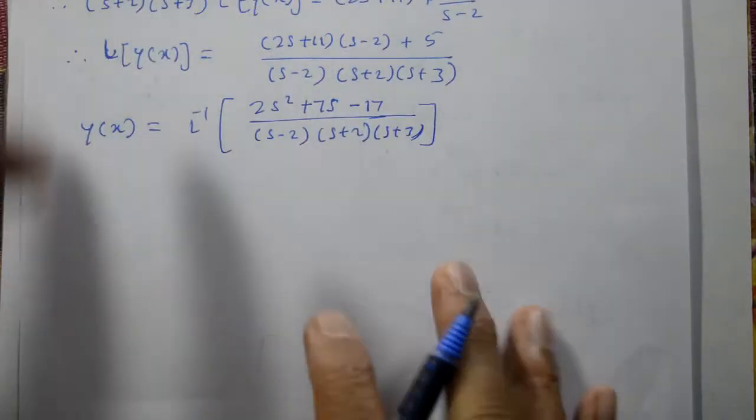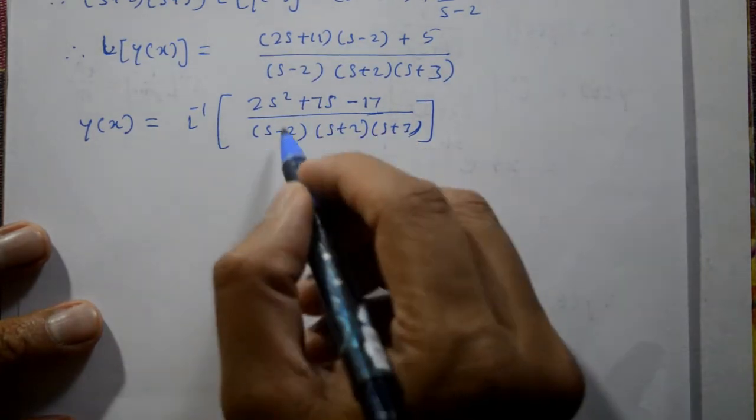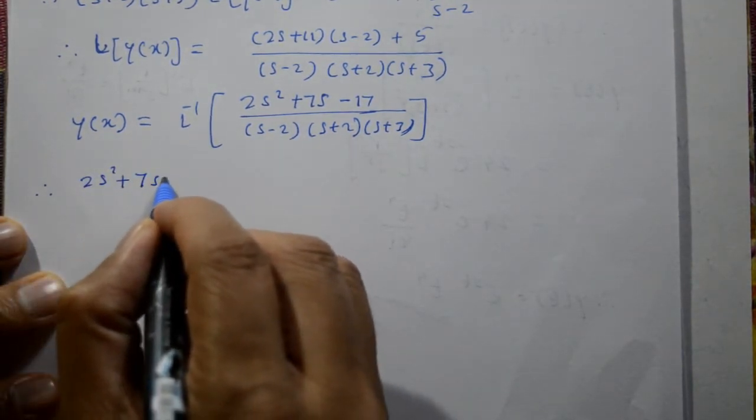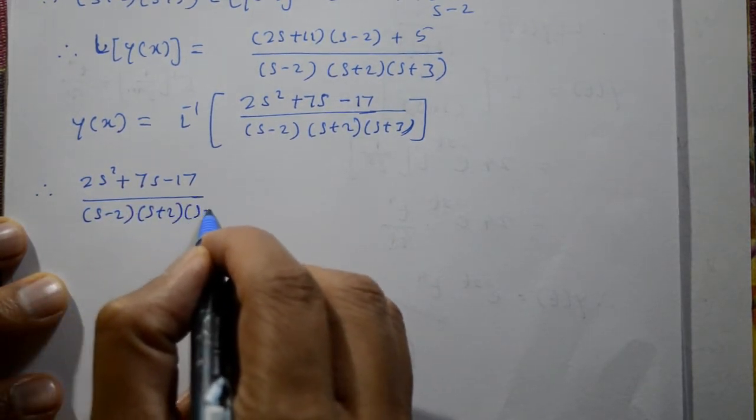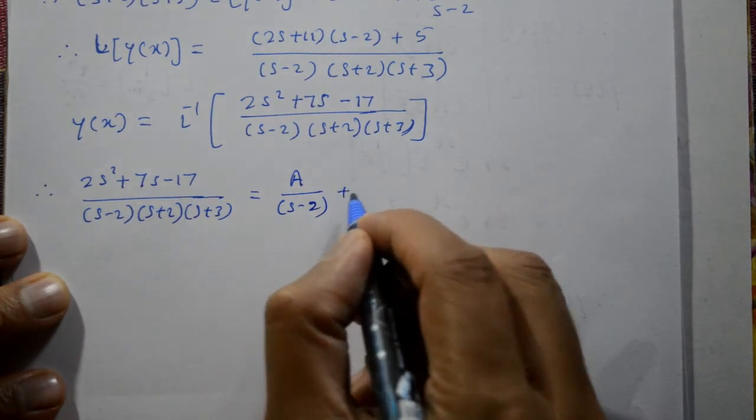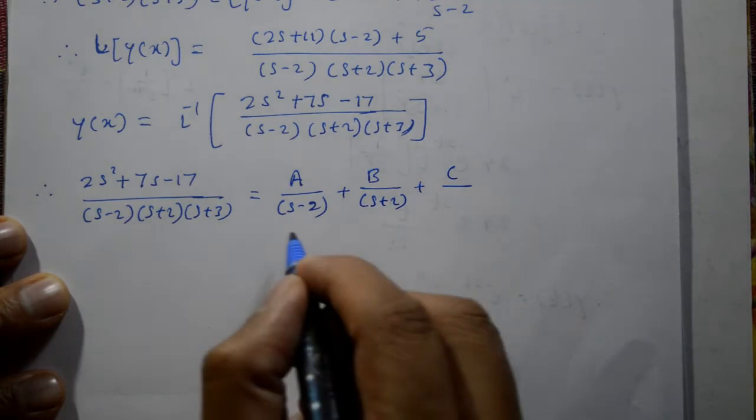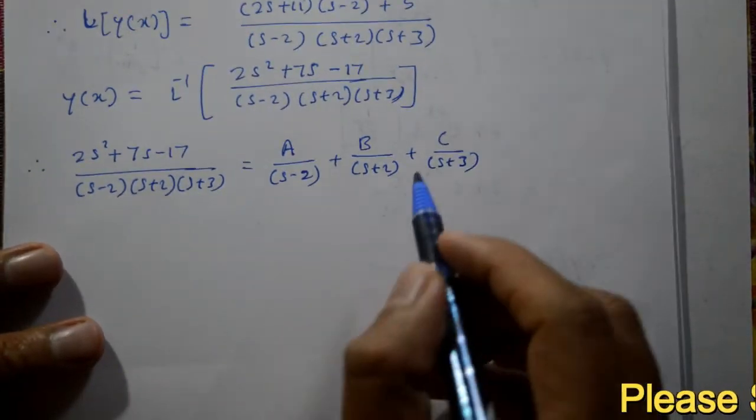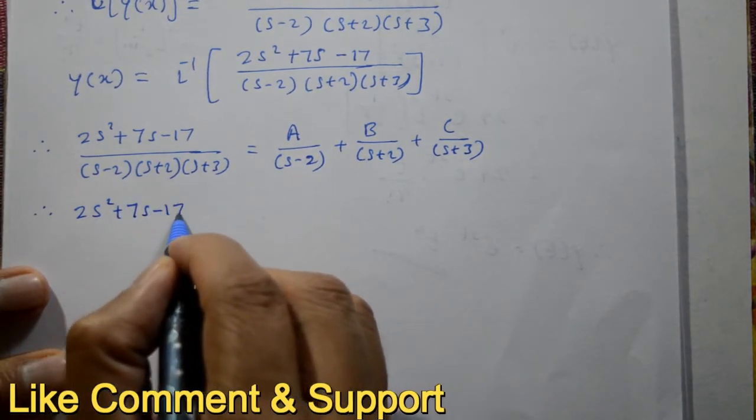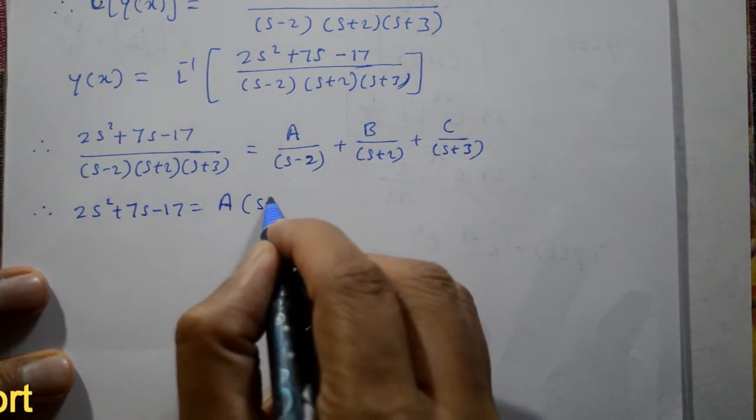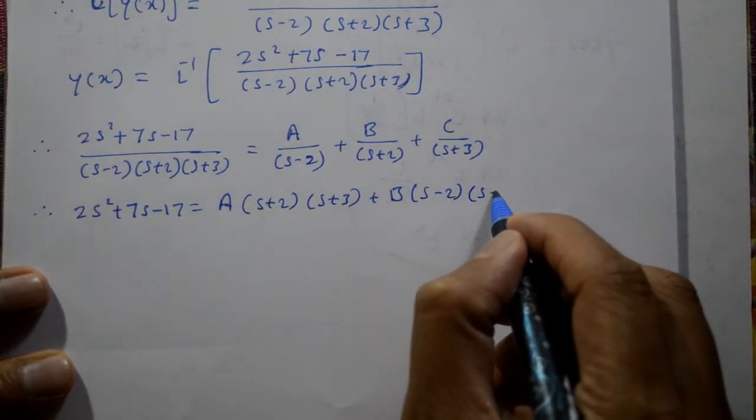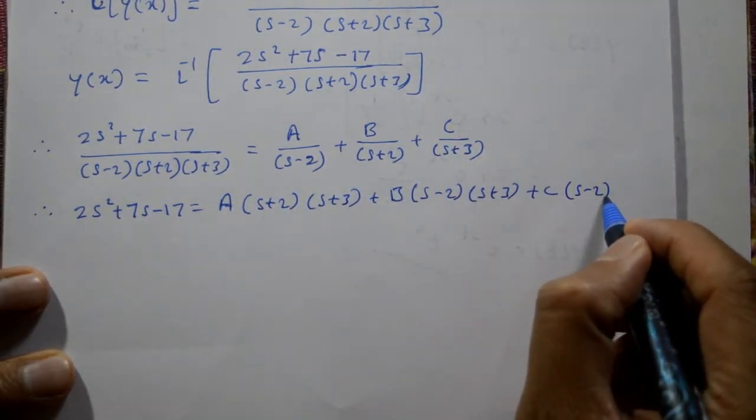Consider this expression. By using partial fraction, 2s square plus 7s minus 17 divide by s minus 2 into s plus 2 into s plus 3. This is equal to right hand side A by first bracket s minus 2 plus B by second bracket s plus 2 plus C by third bracket s plus 3. Canceling LCM, equation is 2s square plus 7s minus 17 is equal to A into s plus 2 into s plus 3 plus B into s minus 2 into s plus 3 plus C into s minus 2 into s plus 2.